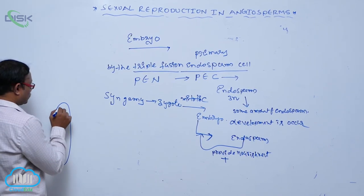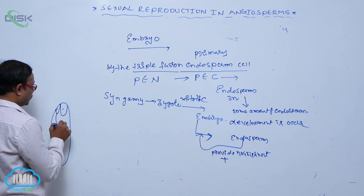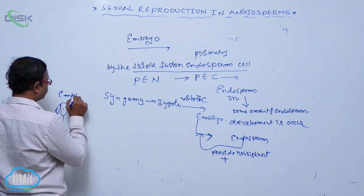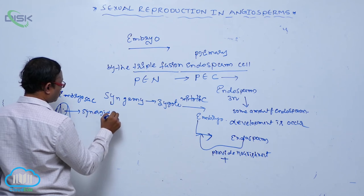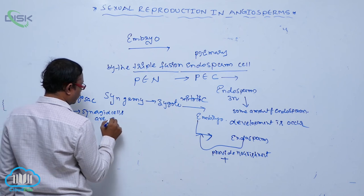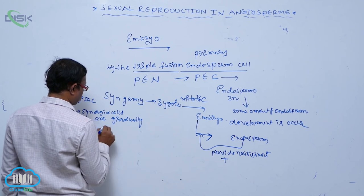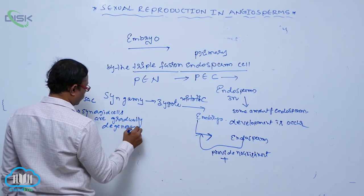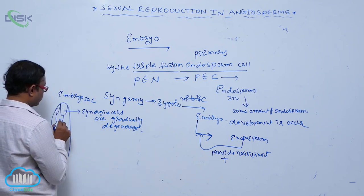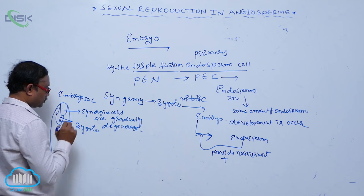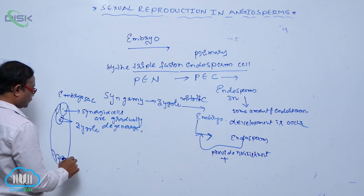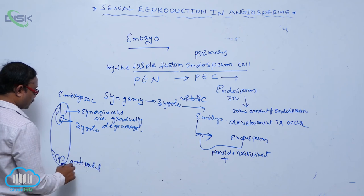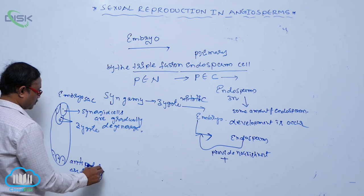In the embryo sac, there are synergid cells and the egg cell. The synergid cells gradually degenerate. The egg cell is a haploid egg cell. When it is fused with the male gamete, it converts into that zygote. The antipodal cells are also present, and these antipodal cells fall off.